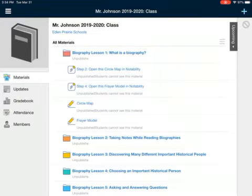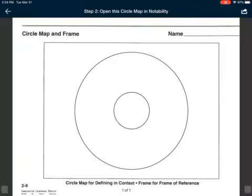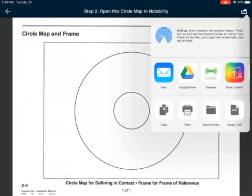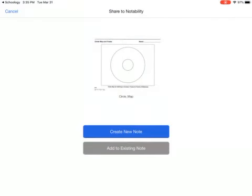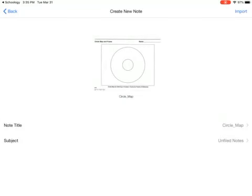Step two, open this circle map in Notability. So I'm going to open this up. In that top right corner, you're going to hit the action button, the rectangle with an arrow. I'm going to send it to Notability. I'm going to hit Create New Note. You always do Create New Note. In the top right corner, hit Import.